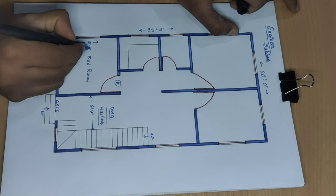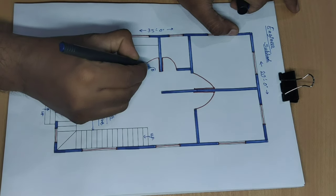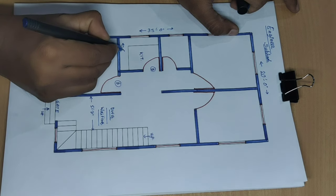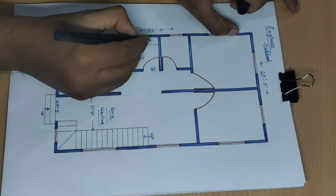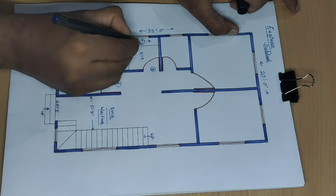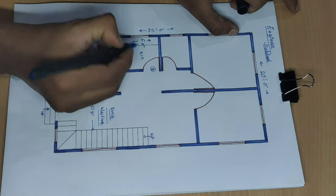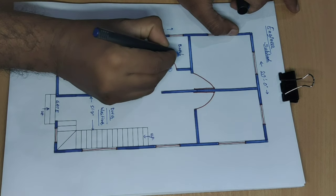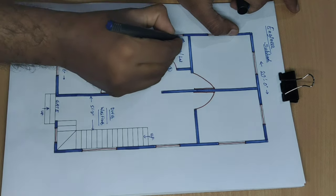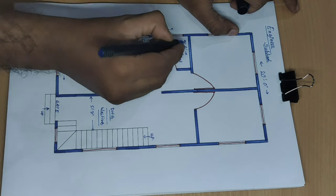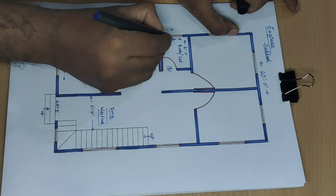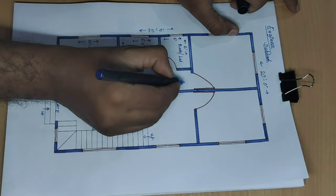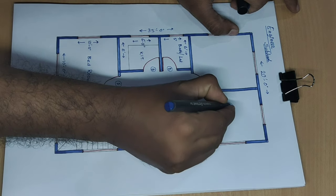10 feet door. Kitchen size 6 feet by 6 feet 11 inch. Door, bath and latrine size 6 feet by 5 feet. Next, open area and door study.